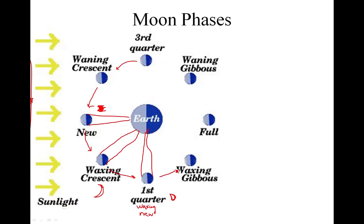The moon keeps cruising along — now it's over in this position. Again, you look at it from the Earth and draw your sight lines in. Now you're seeing most of the moon — you're seeing three quarters of the moon, and only a little bit is blacked out in shadow. Which three quarters? The right three quarters, of course. The right three quarters is the waxing gibbous.